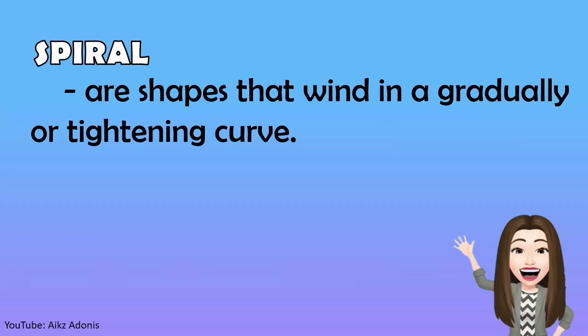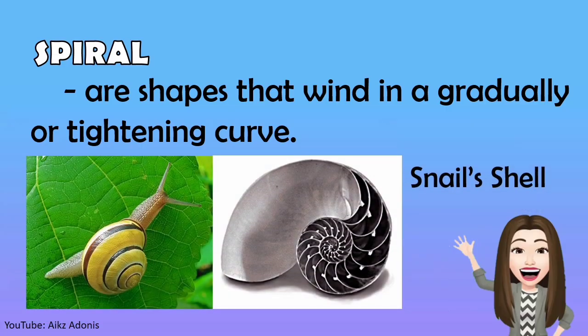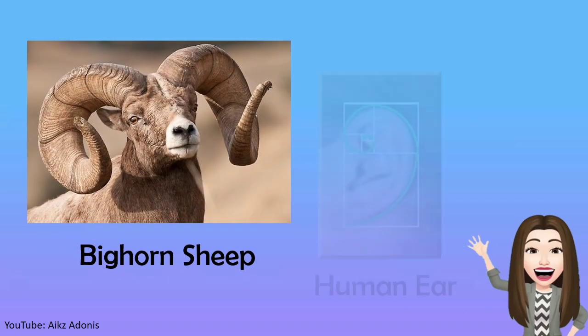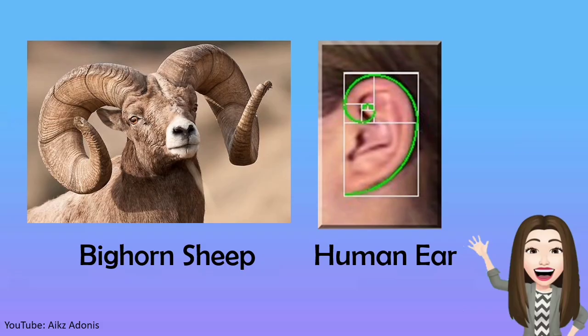Spiral is another pattern that you will see in nature. Spirals are shapes that wind in a gradually tightening curve. Examples of this are a snail's shell, bighorn sheep, and the human ear.